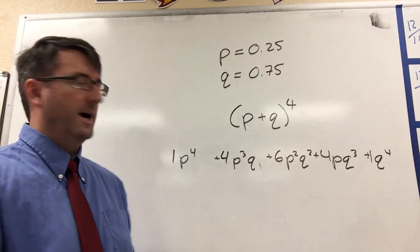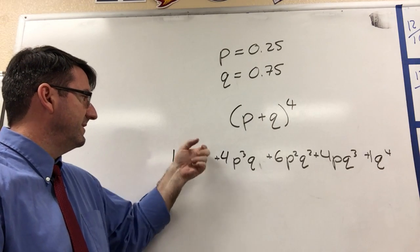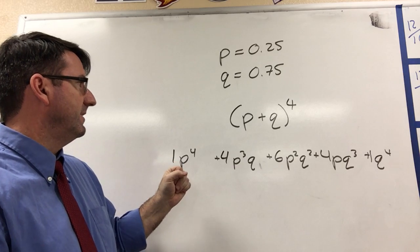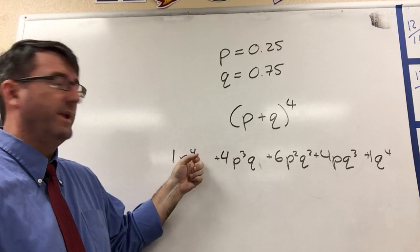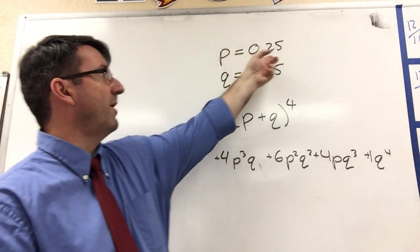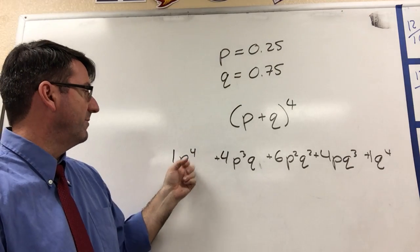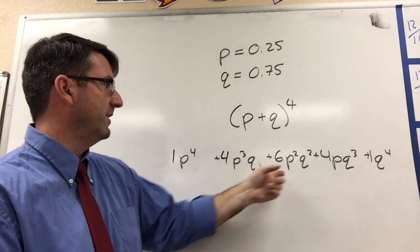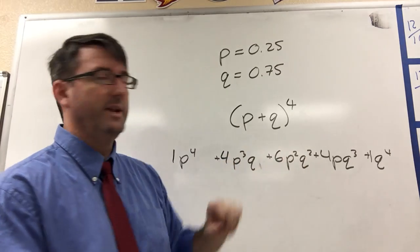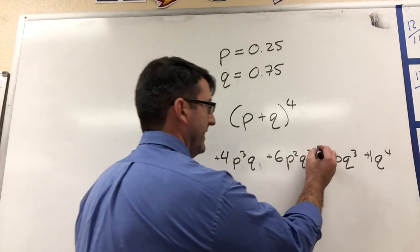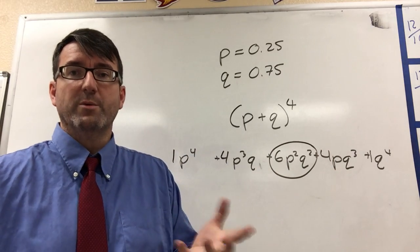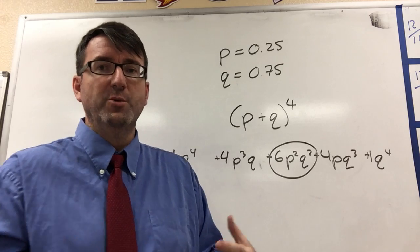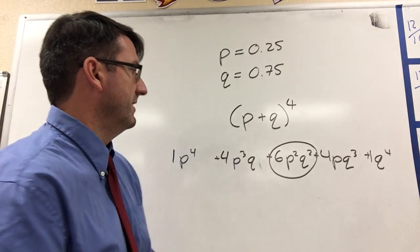All right. Now, so this term right here is going to give us the probability of getting four winning lids. Notice that the P is the probability of winning. The probability of winning four times is going to be given here. The probability of getting three winning lids is this one. The probability of getting two winning lids is this term here. And that's the term we're looking for because we were asked to find the probability of Shirley getting two winning lids out of the four that she purchased.